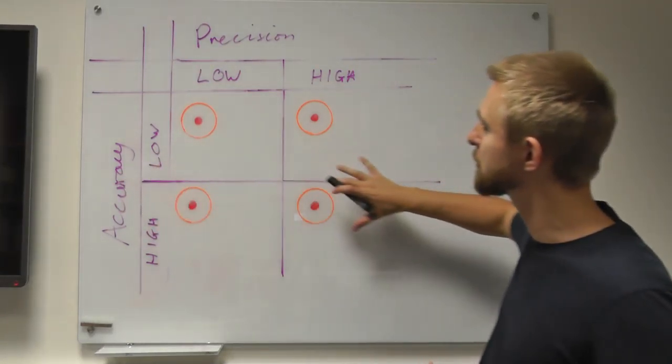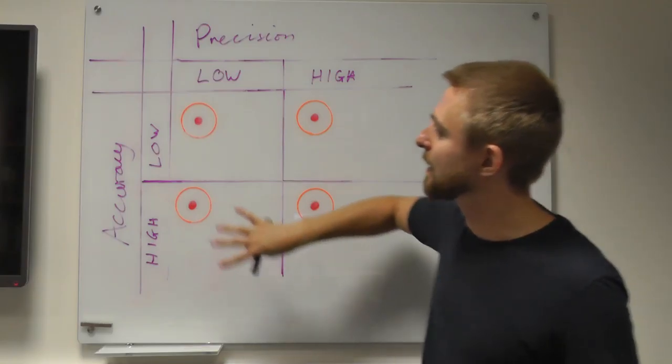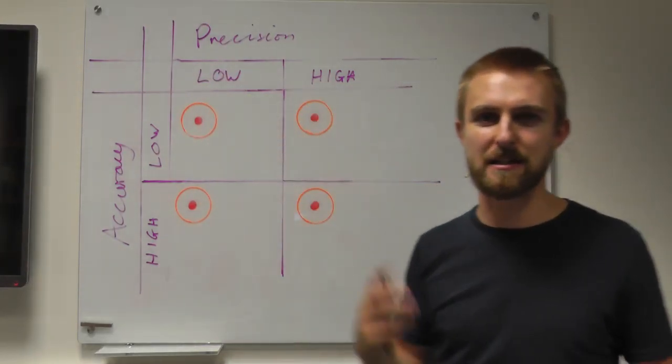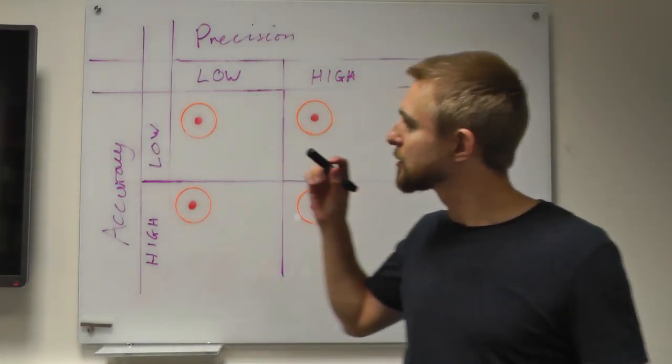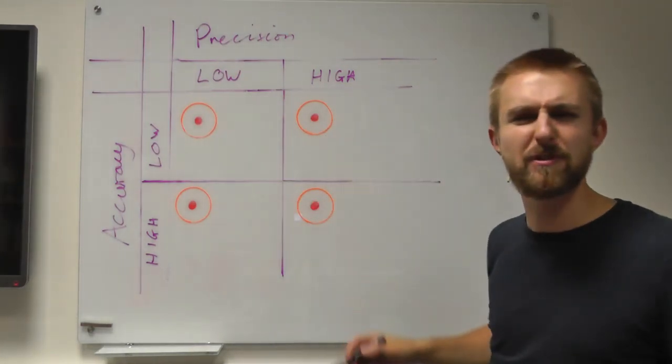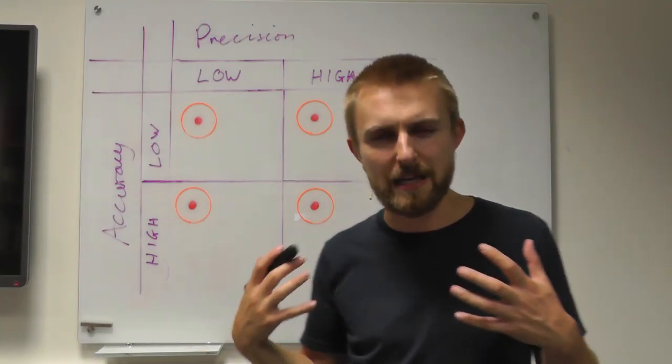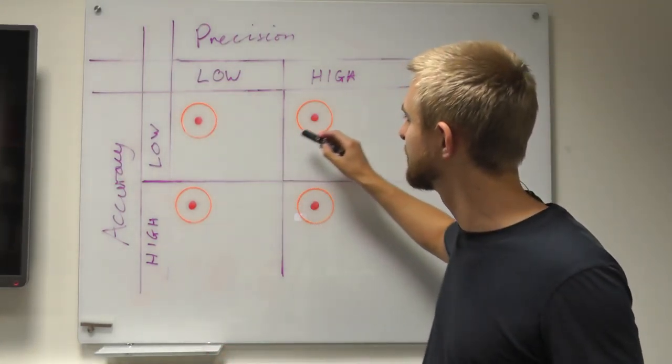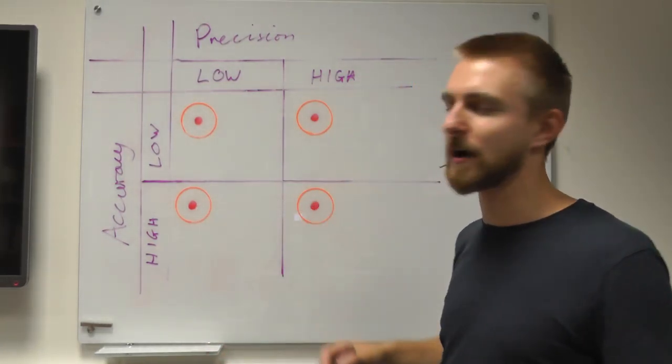So we've got accuracy on the rows, precision on the columns, and high and low represented as splits of two in each. So what we've got are four little archery target boards. So each of these boards, the red dot in the middle, represents the bullseye.